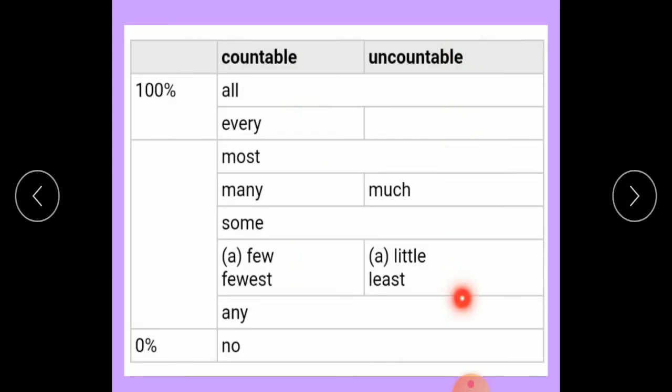Countable, uncountable. 100%: all, used for both. Every, used for countable. Most, used for both. Many, used for countable. Much, used for uncountable. Some, used for both. Few, fewest, used for countable. Little, least, used for uncountable. Any, used for both. No, used for both.